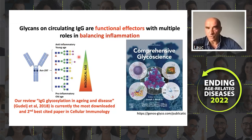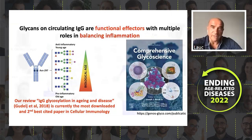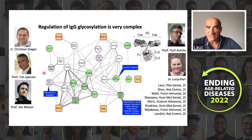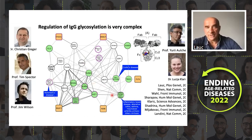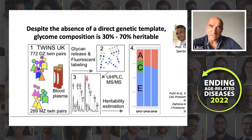We know that these glycans also change with age — when we are younger, we have these anti-inflammatory glycans, and as we get older we get these truncated pro-inflammatory glycans. This is regulated in a very complex way by a network of at least 40 genes, which we have mapped through a series of GWAS papers in the last decade. Many of these genes are known risk factors for different diseases, and despite having a large number of genes, it is heritable, which we have shown in a study of thousands of twins together with Tim Spector.